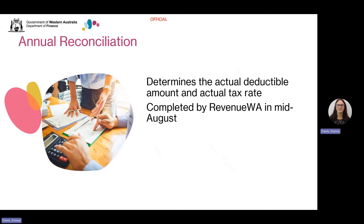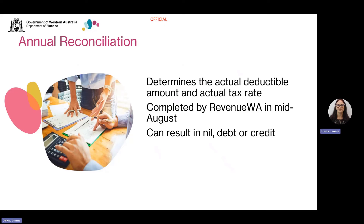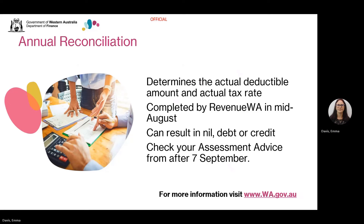As part of your June return, you and all of your group members, if applicable, are required to submit the required wage information by 21 July. We will complete the annual reconciliation process in mid-August to calculate the actual deductible amount and actual rate of tax to determine your payroll tax liability. Any credit or debit amount resulting from the reconciliation is due to the difference between the estimated and actual deductible amounts and/or the estimated and actual rate of tax. Your assessment advice issued from 7 September will detail the calculations and adjustments and includes the due date of payment, and can be viewed from Revenue Online.